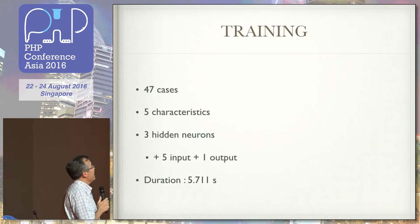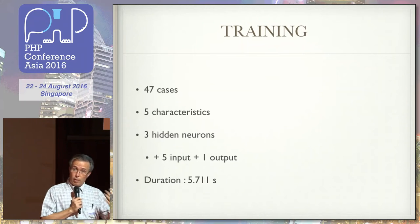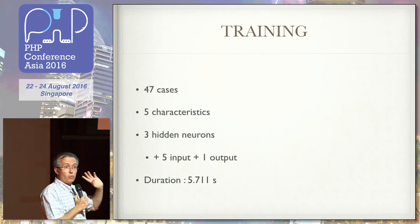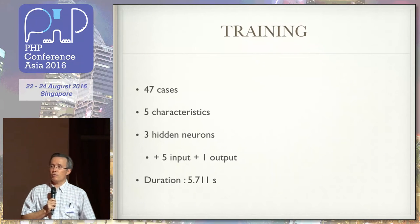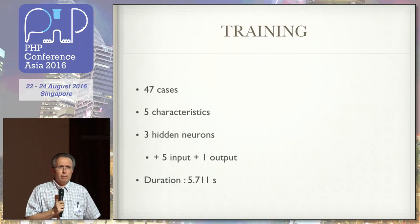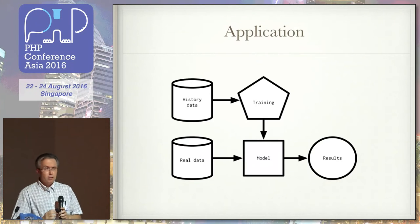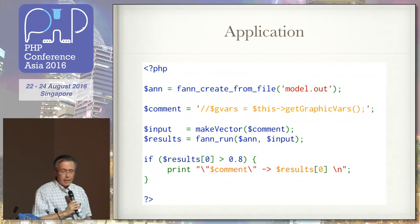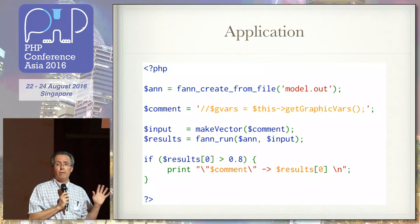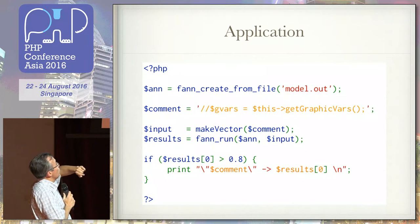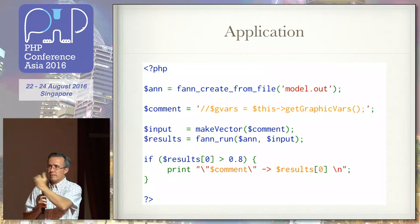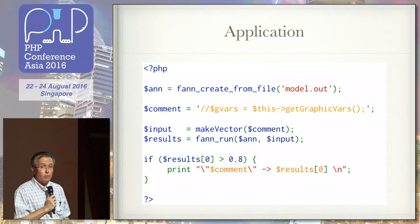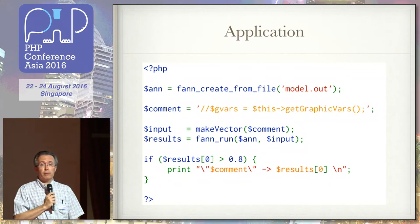Real training case: for phpMyAdmin comment analysis — 47 cases, five incoming characteristics, configuration of three neurons, five inputs, one output — training took six seconds. We end up with a small file of a few kilobytes. Don't try to read it — it's unreadable — but we can reuse it on real data. Applying the model is as simple as the previous code: create a resource, load the model, extract comments from the real codebase using the same characteristics as training, call fann_run, and get results in an array.